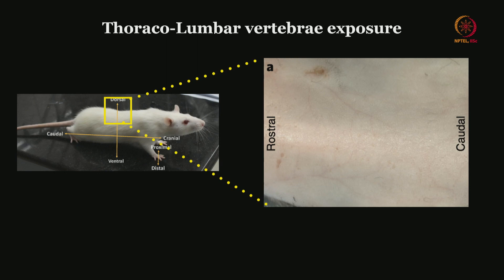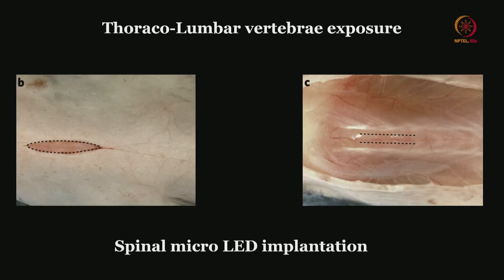Now comes the thoracolumbar vertebra. This is the cervical vertebra, then the thoracic vertebra from there, then it becomes thoracolumbar, and then the sacrum, coccygeal and tailbone — that is the spinal column we have seen so far. This is similar to the thoracic vertebra exposure. Just to orient yourself, this is the skin after you clip or shave the hair off.